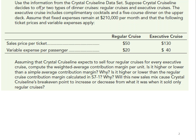Here's an example using the Crystal Cruise Line data set. Suppose Crystal Cruise Line decides to offer two types of dinner cruises: regular cruises and executive cruises. The executive cruise includes complimentary cocktails and a five-course dinner on the upper deck. Fixed expenses remain at $210,000 per month. Assuming they sell four regular cruises for every executive cruise, we need to compute the weighted average contribution margin per unit and determine if it's higher or lower than the simple average contribution margin.